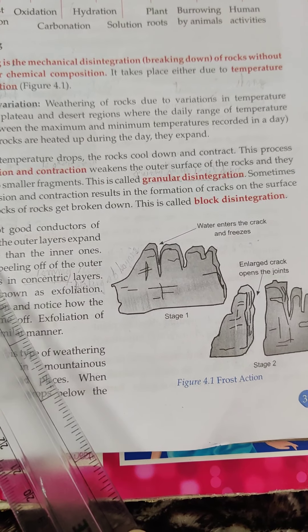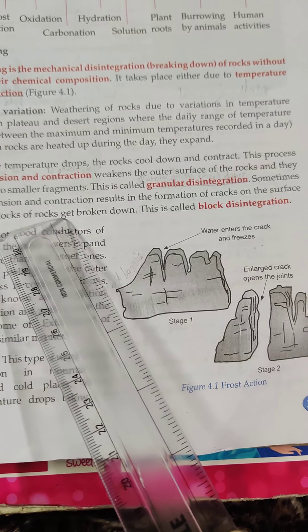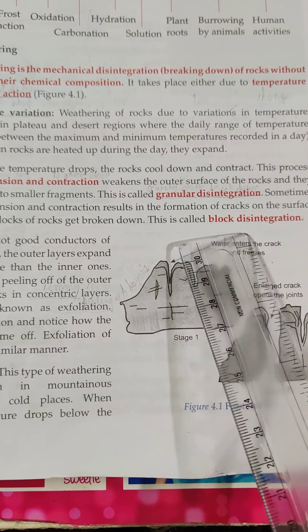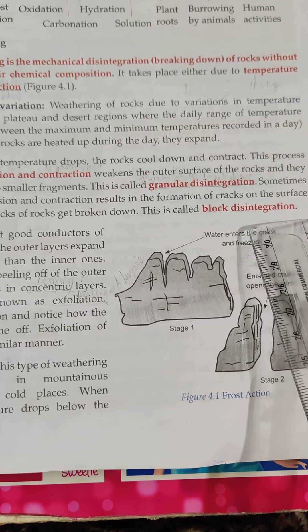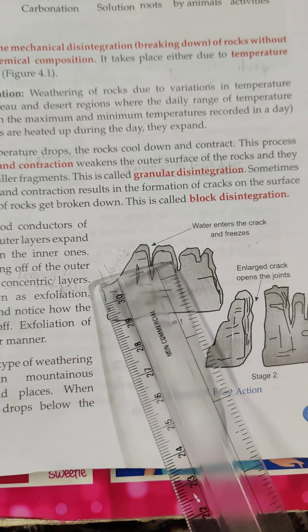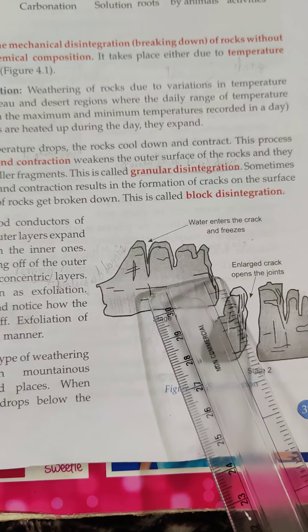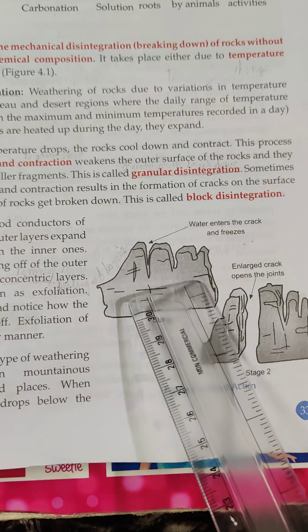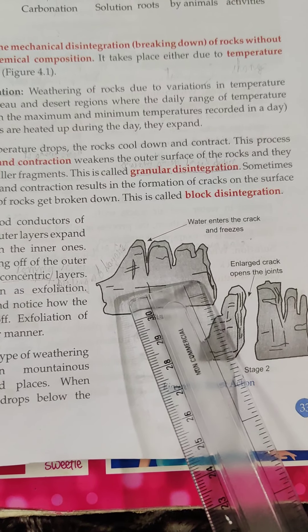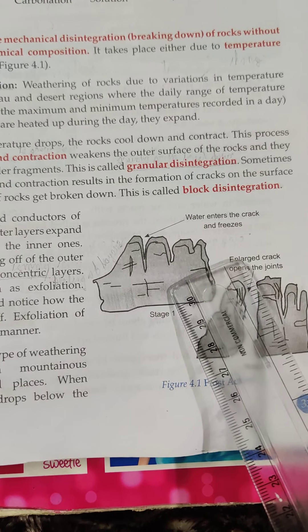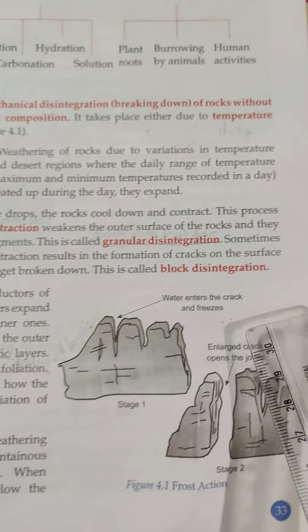Sometimes this expansion and contraction also results in the formation of cracks on the surface of rocks, and blocks of rocks get broken down. In this case it is called block disintegration. Some rocks are not good conductors of heat — their only outer layer gets heated up and cooled down. In this case, the peeling off of the outer layer of rocks in concentric layers takes place. This process is known as exfoliation.